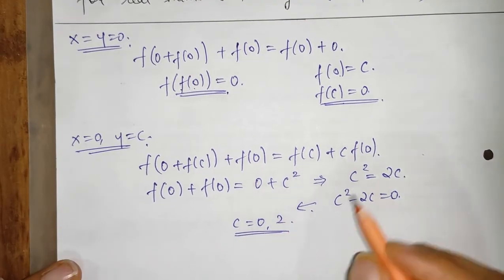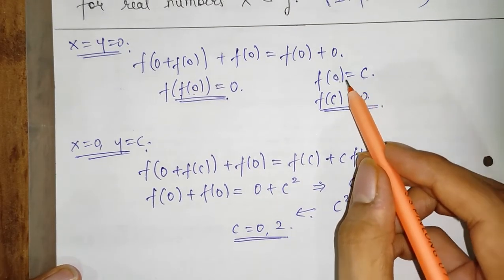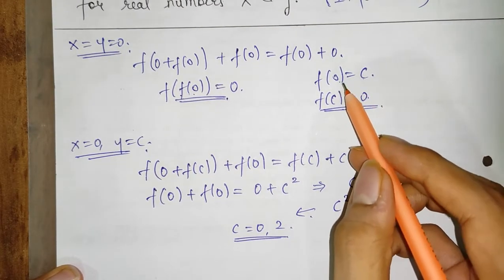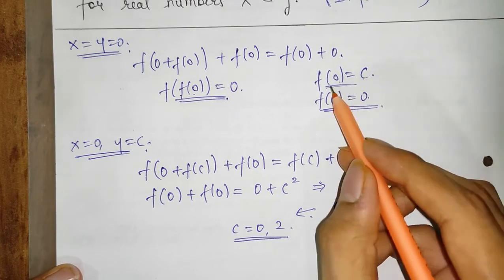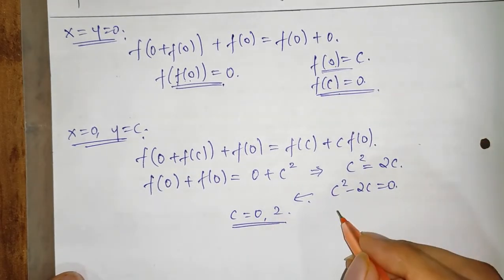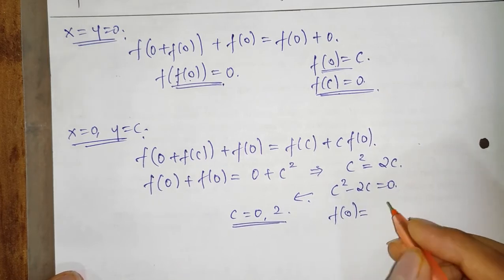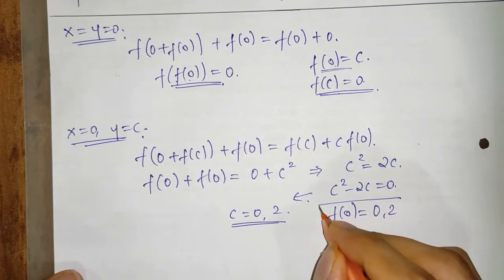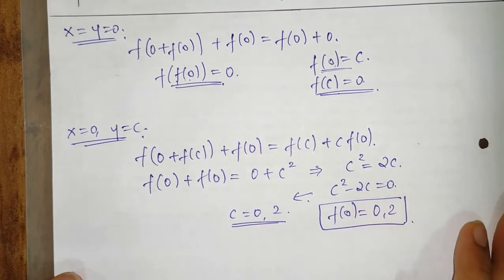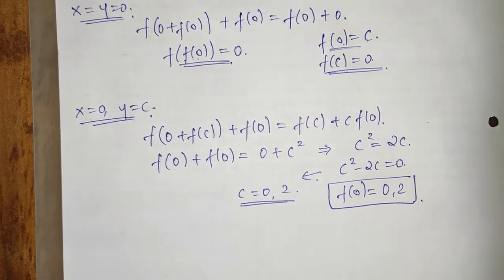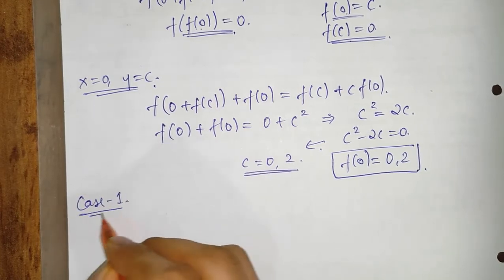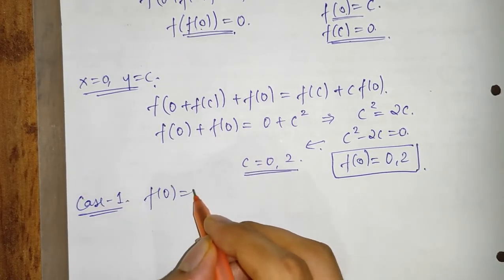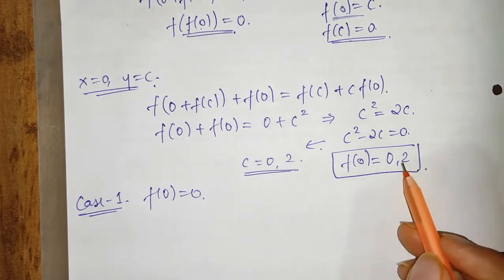So we got two values of c: one is 0 and the other is 2. Since c = f(0), we have two values of f(0): either 0 or 2. We will now consider two cases.